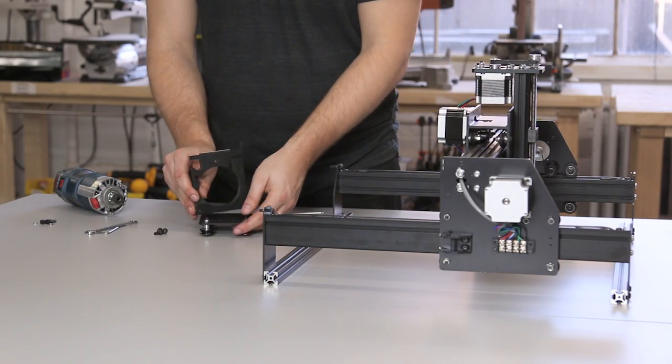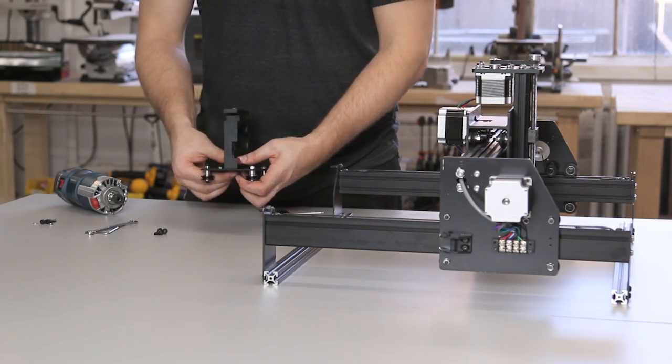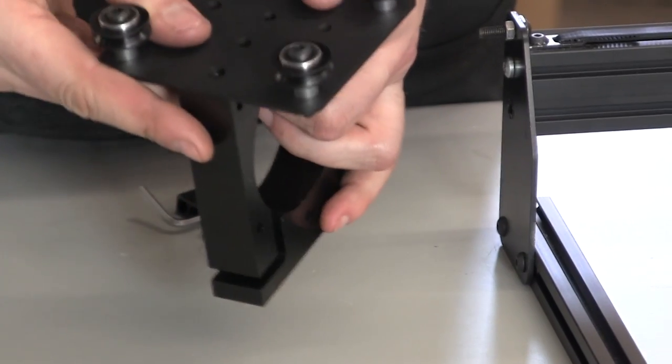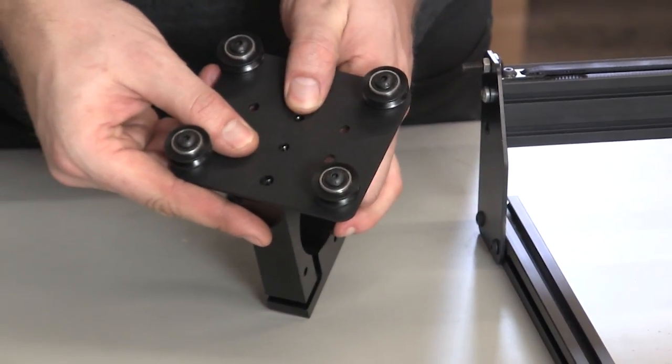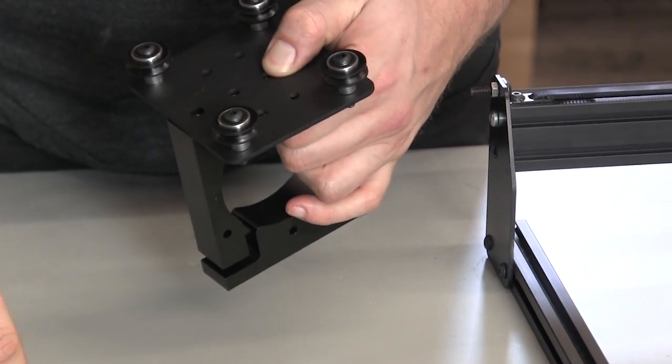Now we'll attach the Bosch Colt mount to this plate. Use small screws from the back side of the plate into the threaded holes of the Bosch Colt mount.